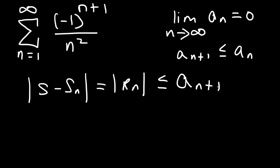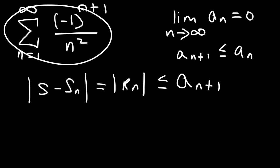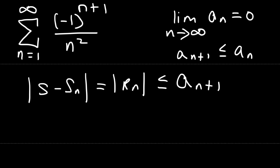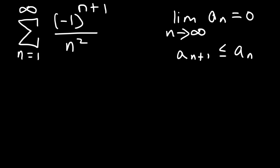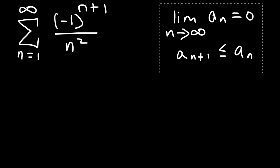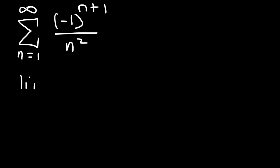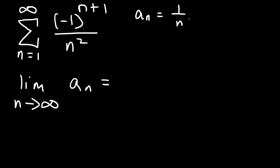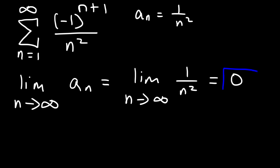So how can we use this information to approximate this sum correct to two decimal places? First, let's make sure that we have a convergent series. Let's perform the divergence test. As n goes to infinity, what's going to happen to a sub n? Well, a sub n is 1 over n squared. The limit as n goes to infinity of 1 over n squared equals 0, so it passes the divergence test.